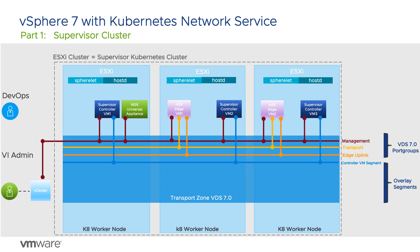A load balancer is created in NSX to balance traffic to the Kubernetes API across the three Supervisor control plane VMs. The IP for the load balancer comes from the ingress network range defined at cluster deployment. Each of the system namespaces in the cluster gets its own NSX segment.